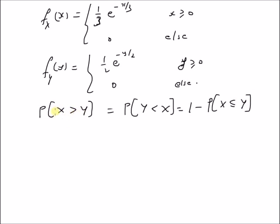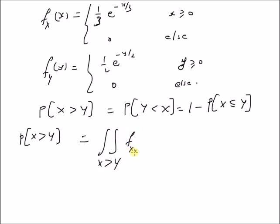This inequality has the same probability as Y less than X, and is also equal to 1 minus the probability that X is less than or equal to Y. By definition, the probability of an inequality — basically a region in the total XY plane — is equal to the double integral over the region x greater than y of the joint PDF f(x, y) dx dy. In this case, this region is specified by x greater than y.